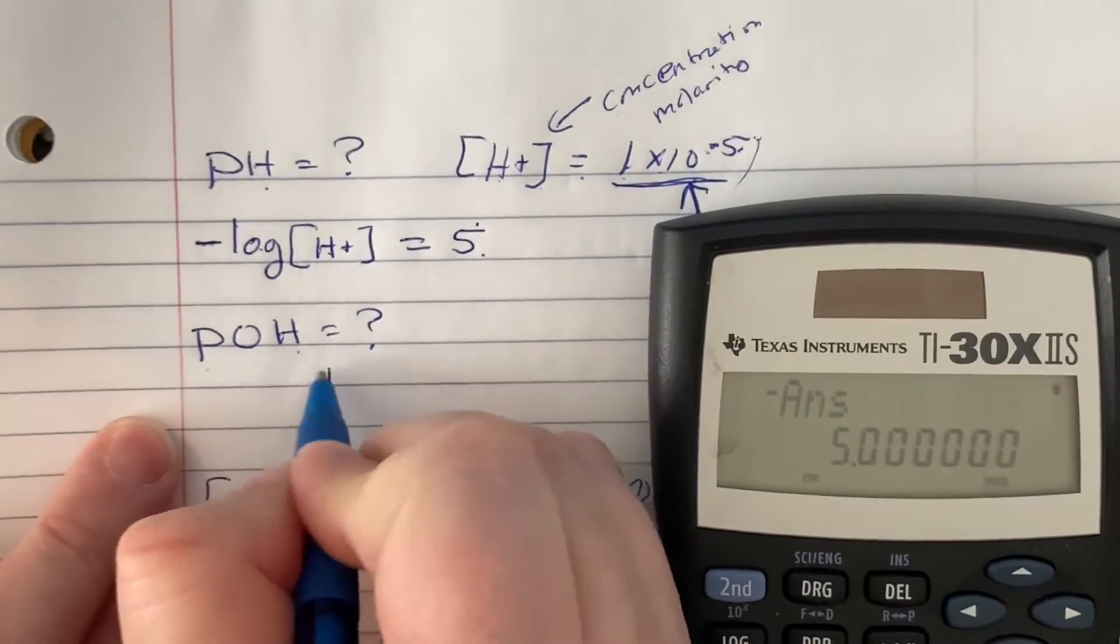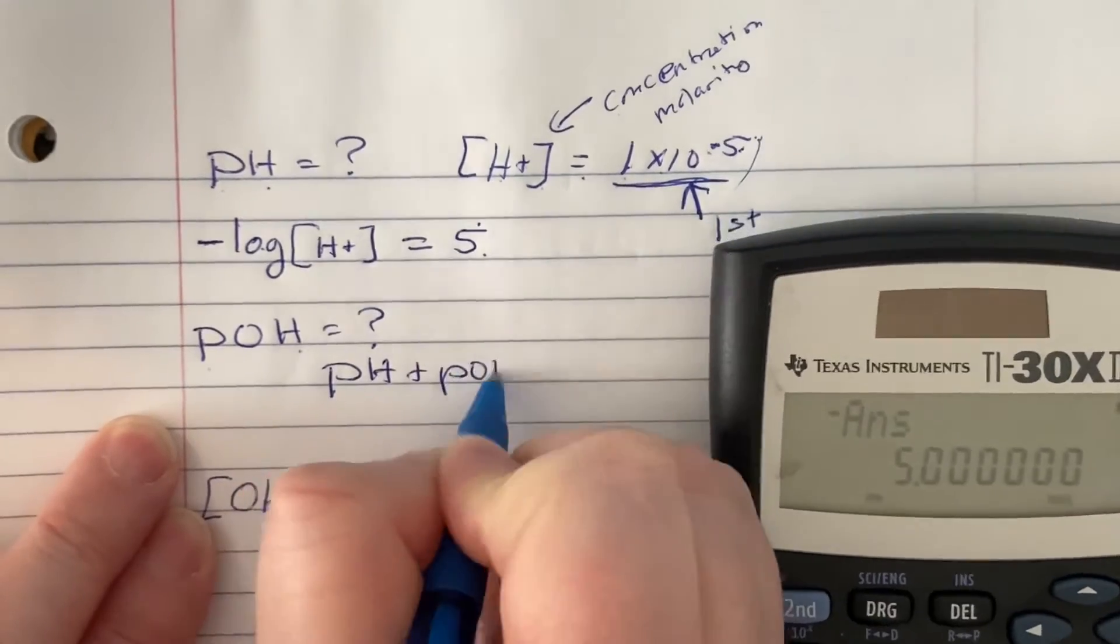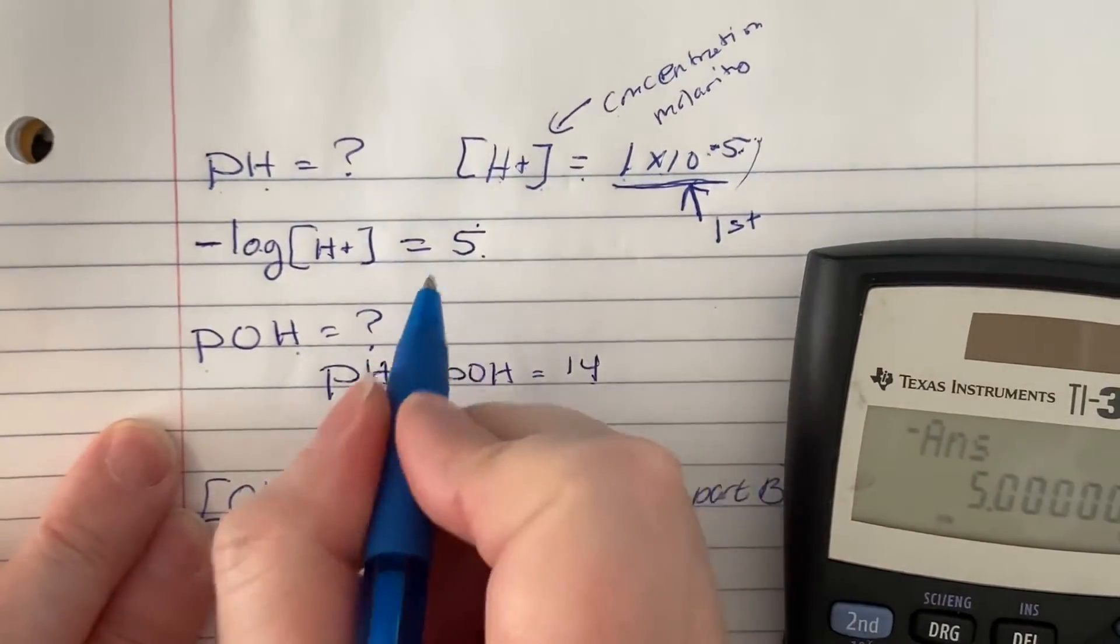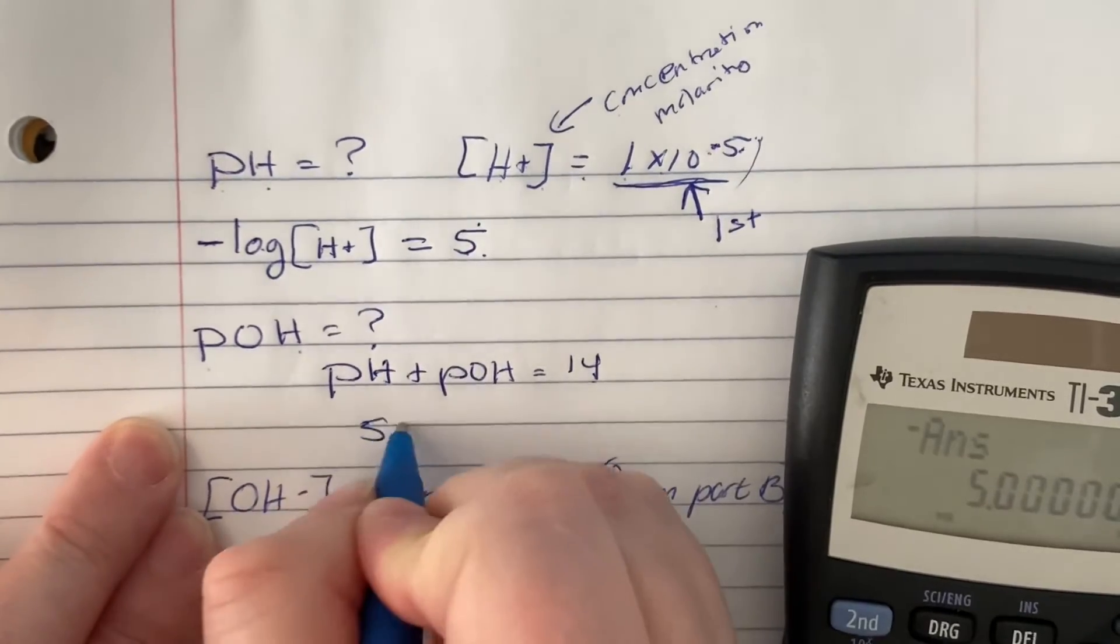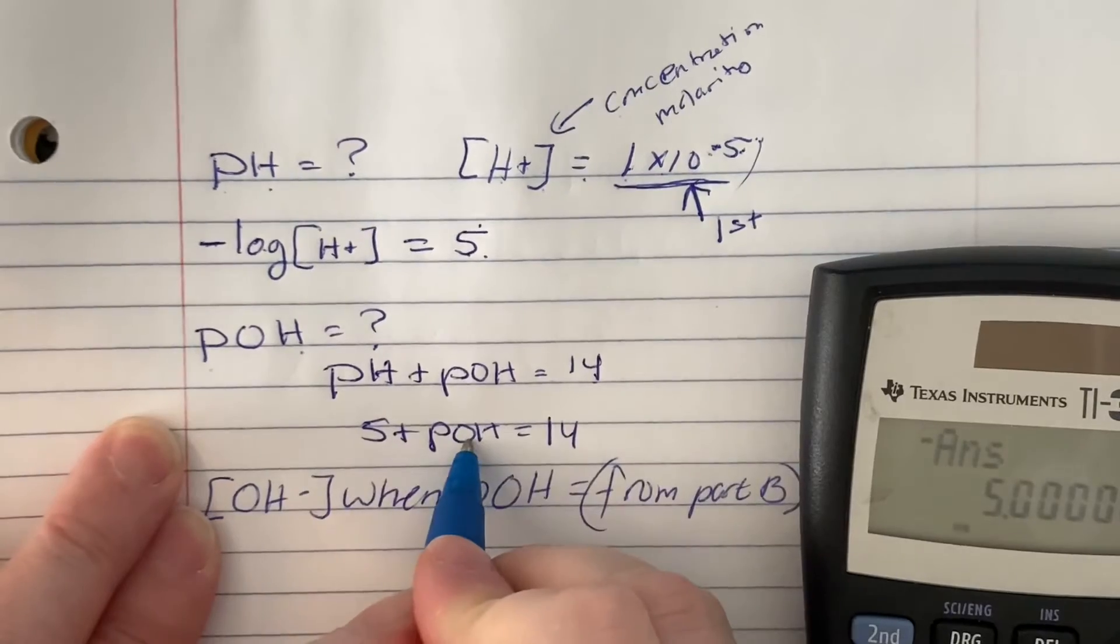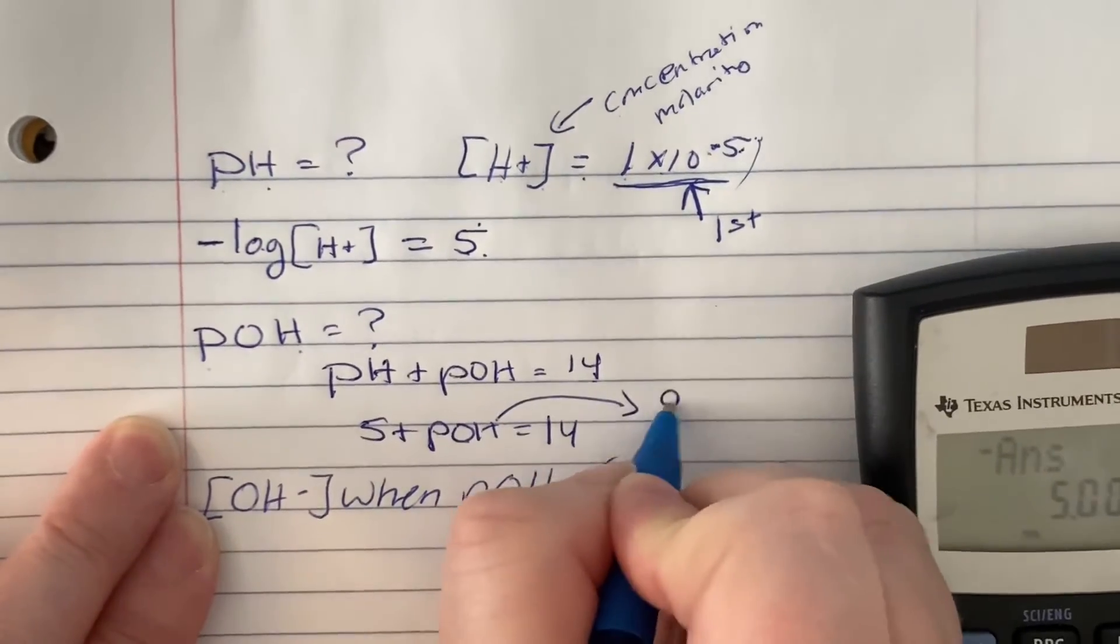P-O-H is even easier because pH plus pOH equals 14. Because remember, it's a 14-point scale. So if I know the pH is 5, what's my missing number? That means my pOH is 9.